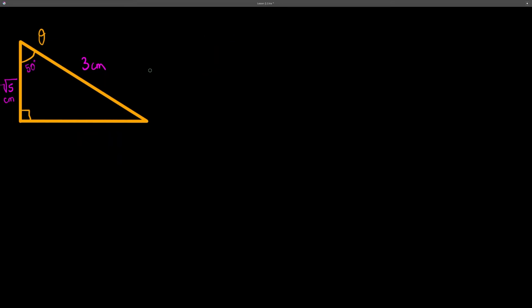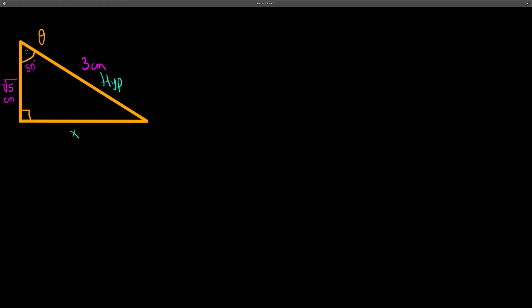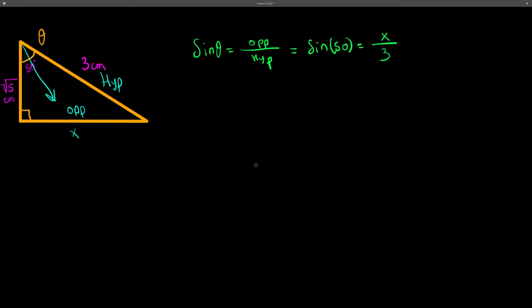Another way you can use sine and cosine is to find a side that is unknown — so side x in this case. We use the functions, substitute what we have, and since the angle is given, it's pretty straightforward. First identify the sides: this is the hypotenuse, and the side facing the angle is the opposite. So: sine theta equals opposite over hypotenuse, meaning sine theta equals x over 3, and then we solve.